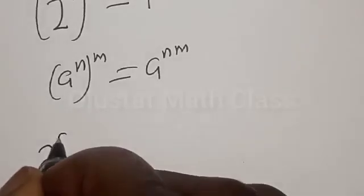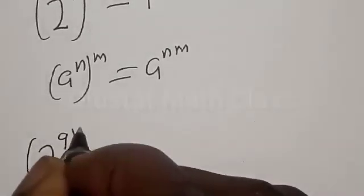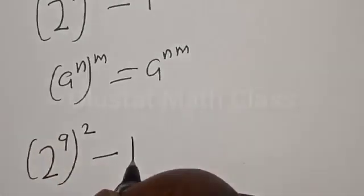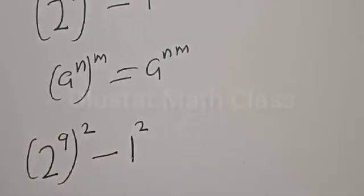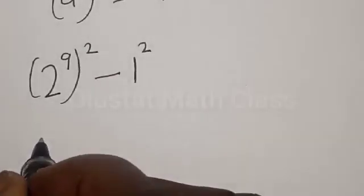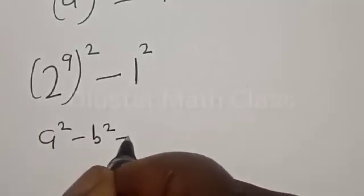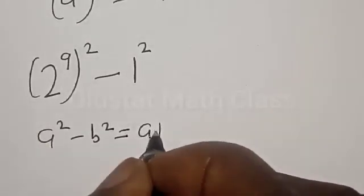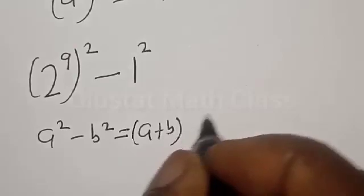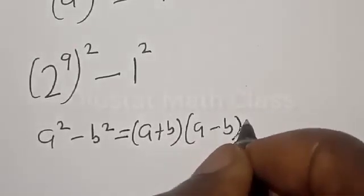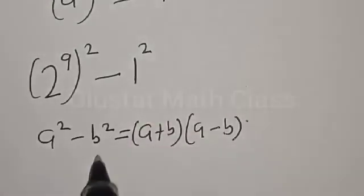2 raised to power 9 squared minus 1 is the same thing as 1 squared. Now remember this: if you have a squared minus b squared, it's the same thing as (a plus b) multiplied by (a minus b).